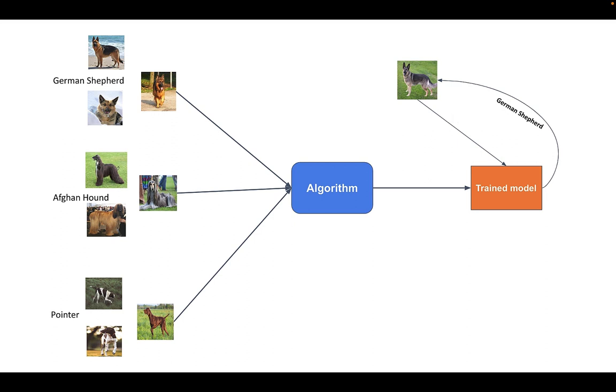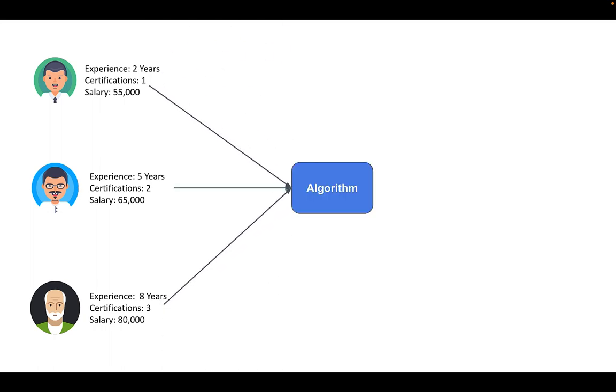Let's look at another example. Say we want to train a machine learning model to predict the salary of a person based upon his experience and certifications. To do that, we firstly collect the dataset, which will consist of the experience, certification, and salary of different persons. After getting the dataset, we pass it to our machine learning algorithm, which finds the pattern, and we get our trained model. In this trained model there is a specific pattern using which it can predict the salary of a person given their experience and certification.